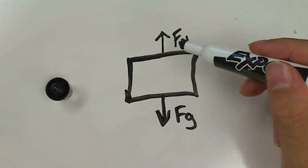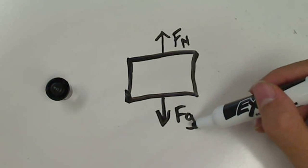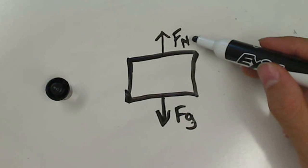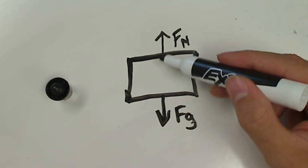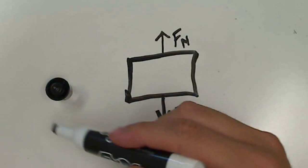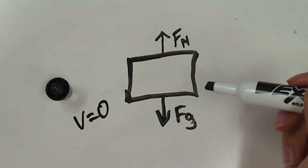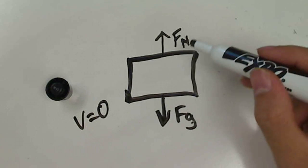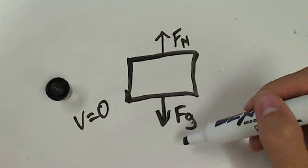There are three things to look for: one, that you have all the forces — there's an up force and a down force; two, that you've labeled them — the force pulling it down is gravity, the force pushing it up is normal; and three, these two forces are the same size. They're being perfectly canceled out, meaning it's at a constant velocity — in this case, velocity equals zero, but it's still constant. Constant velocity means these forces must be canceling out, so the arrows are the same size.